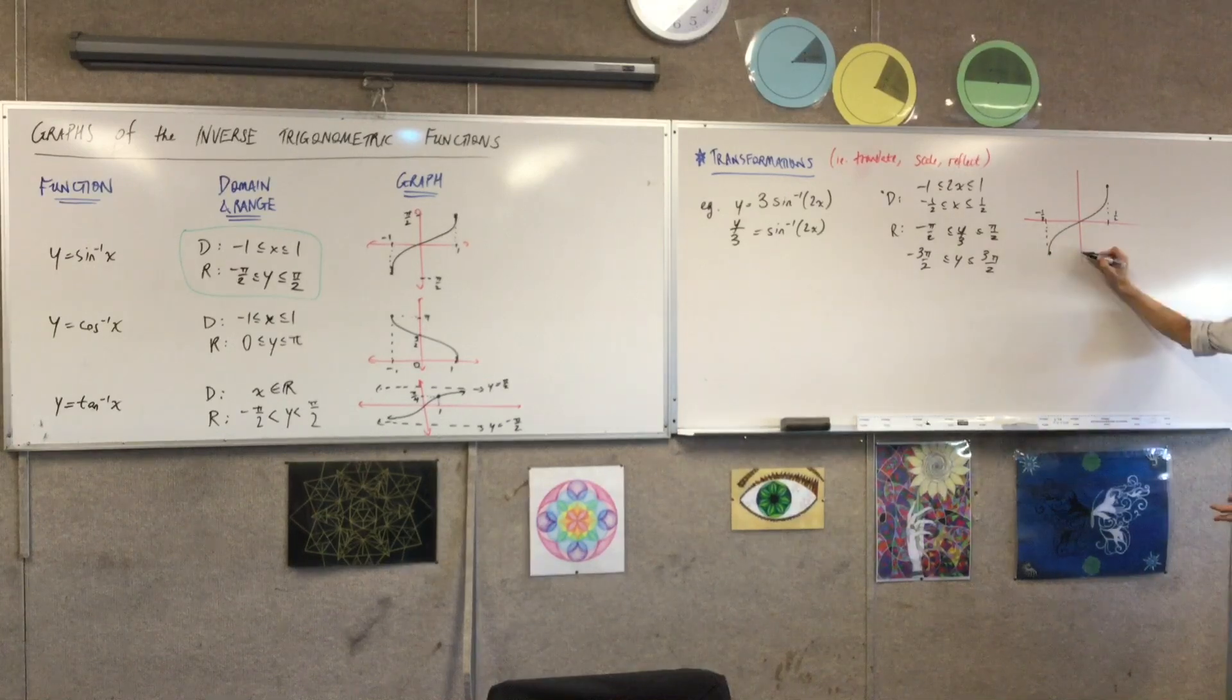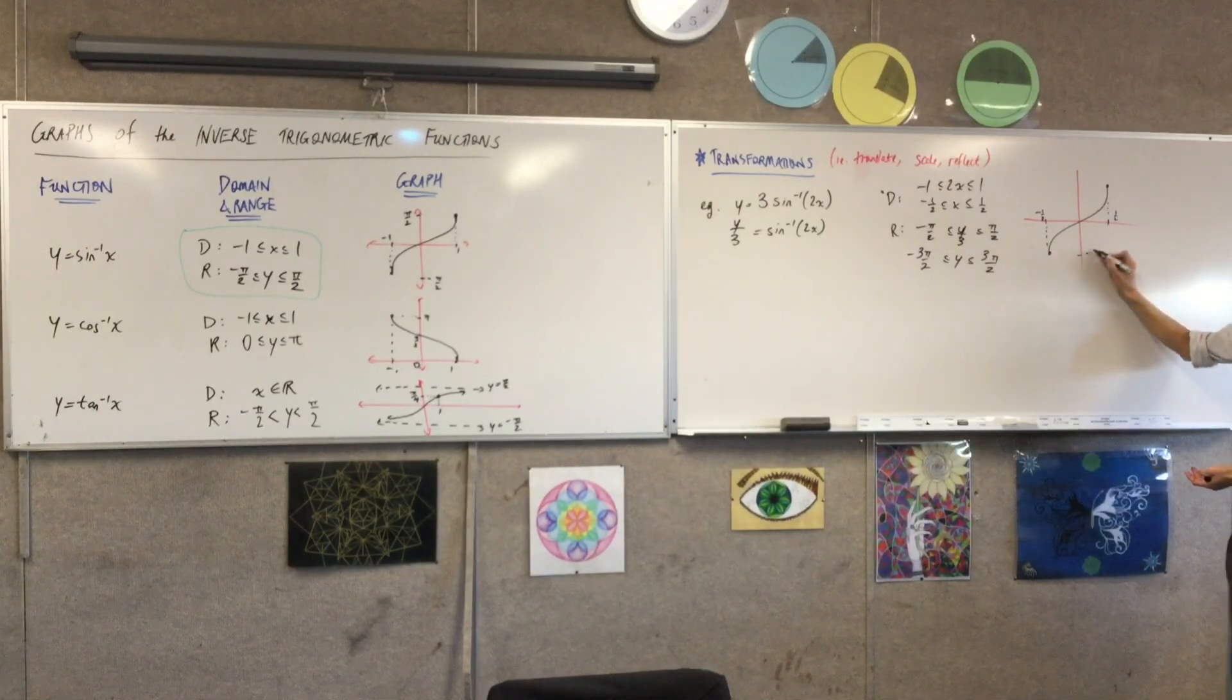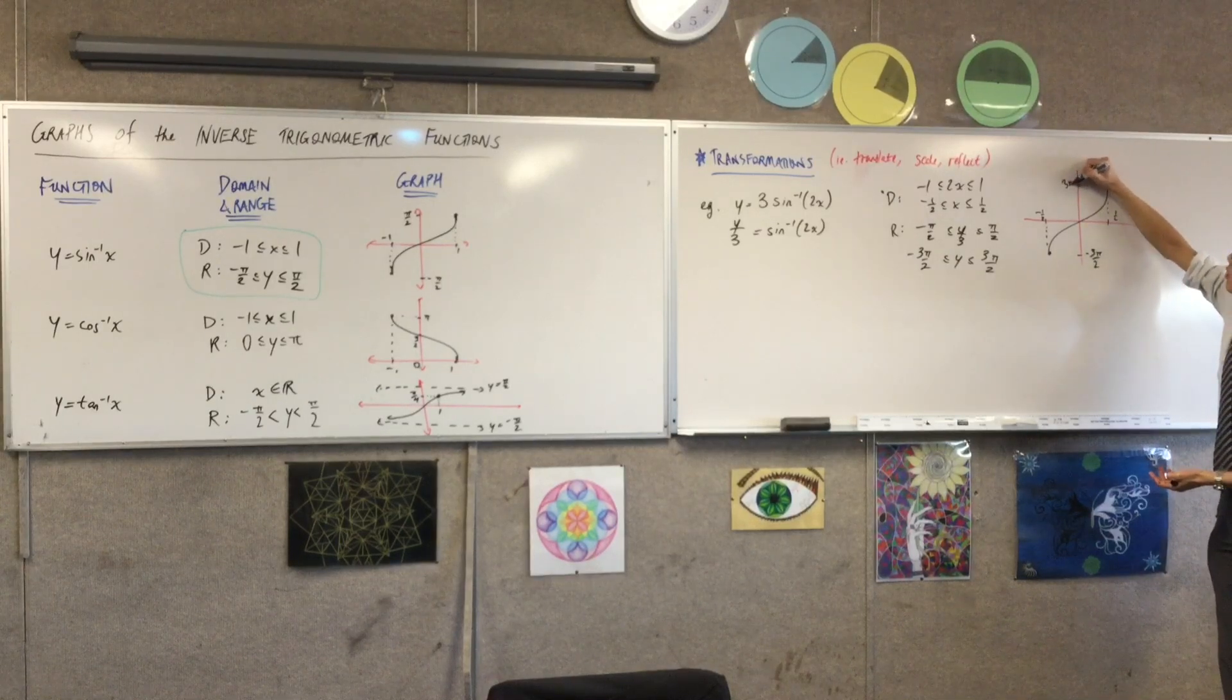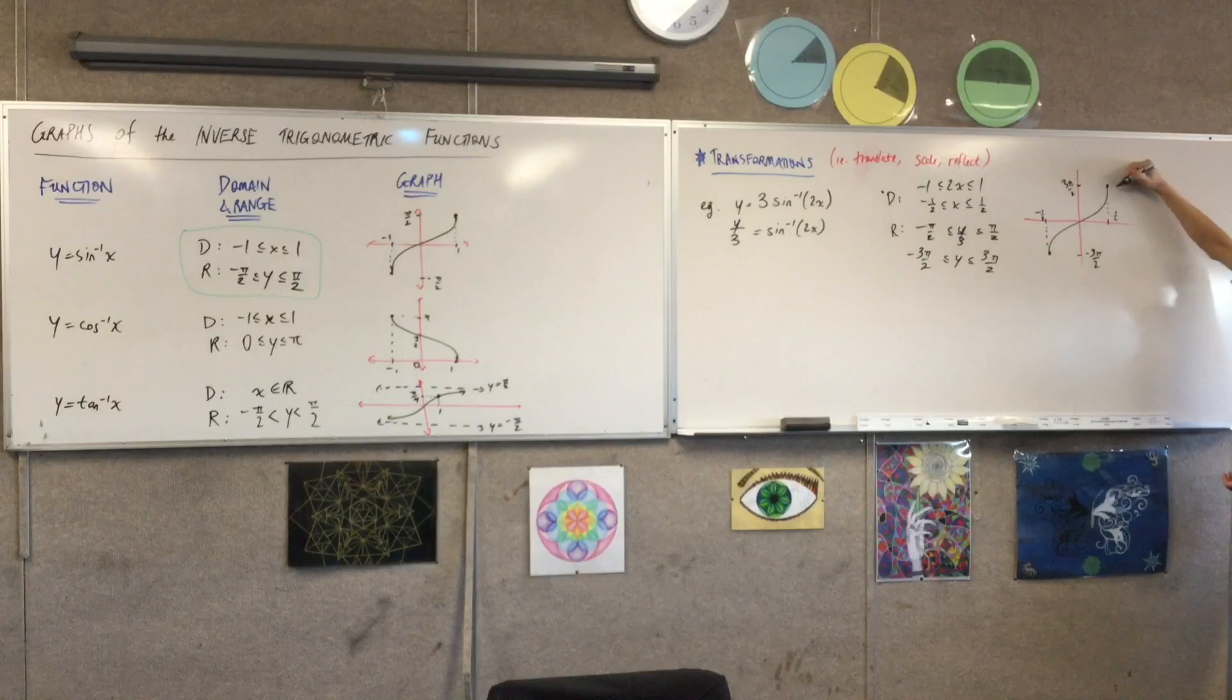And likewise, this is going to be, instead of negative π on two, negative 3π on two, all the way up to 3π on two. Don't forget to label one, are they?